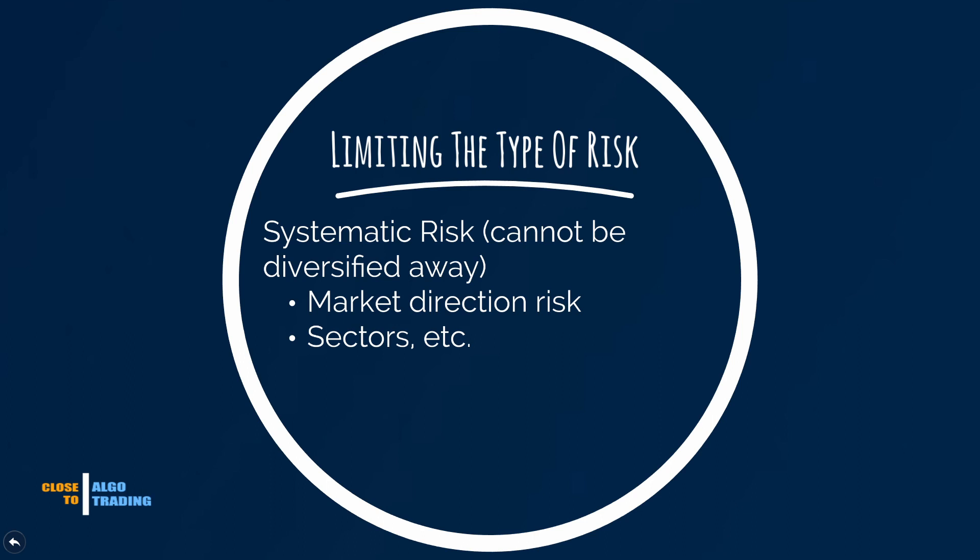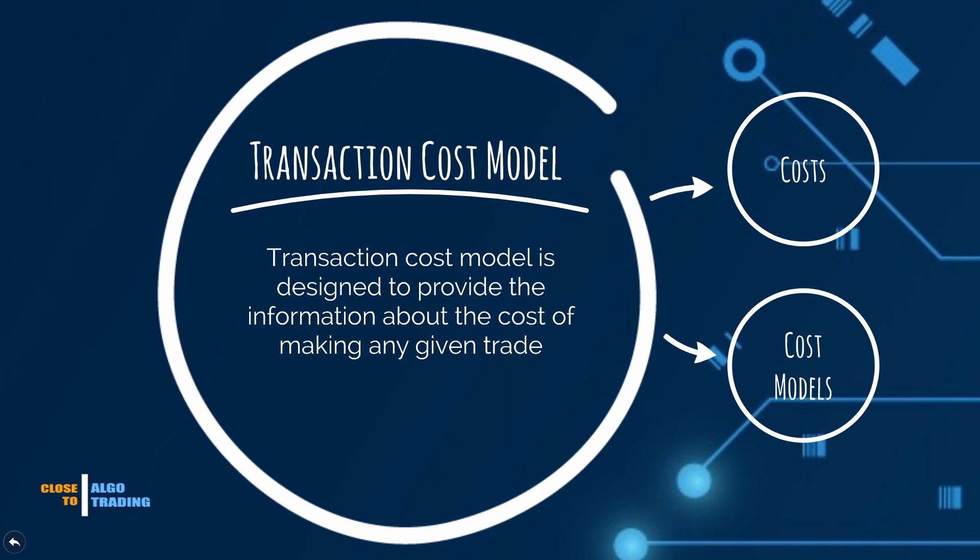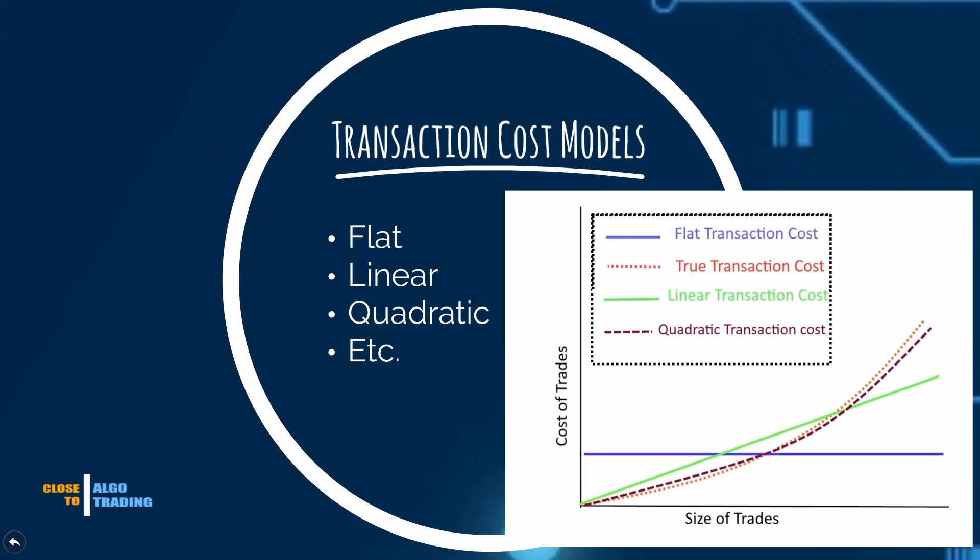The next element of the trading system is the transaction cost model. This model is designed to provide the information about the cost of making any given trade. There are three main costs: commissions and fees, slippage, and market impact. As usual, the transaction cost models can be very simple, like a flat model that always returns the same value of transaction cost, or can be complex, for example, quadratic cost function, like the ones that return the predicted cost as close as possible to the real cost. You can see on the graph below how different functions work.